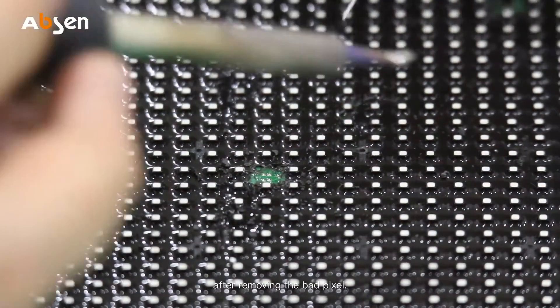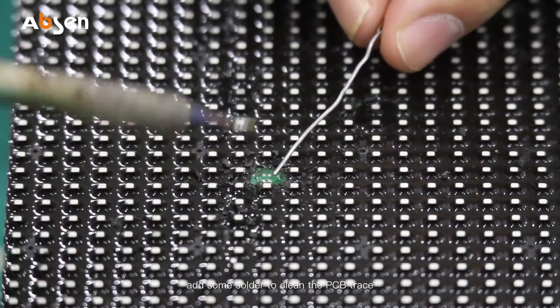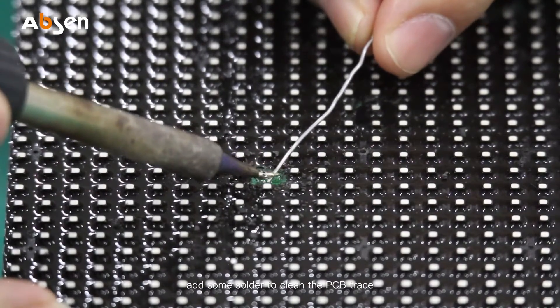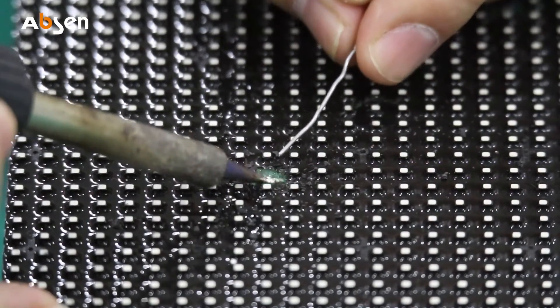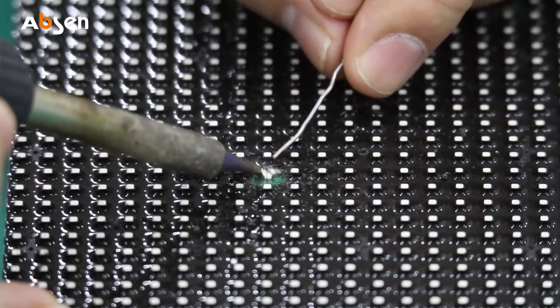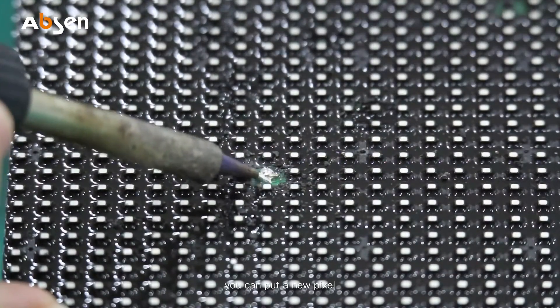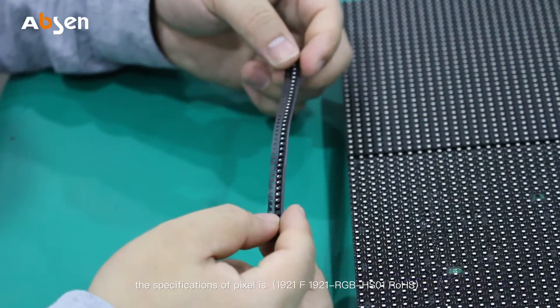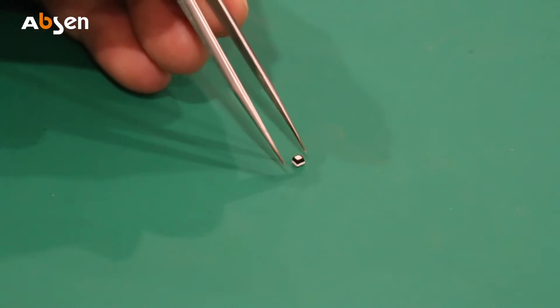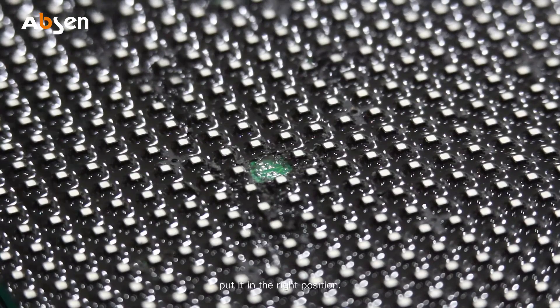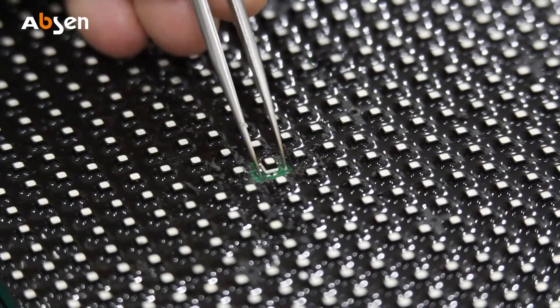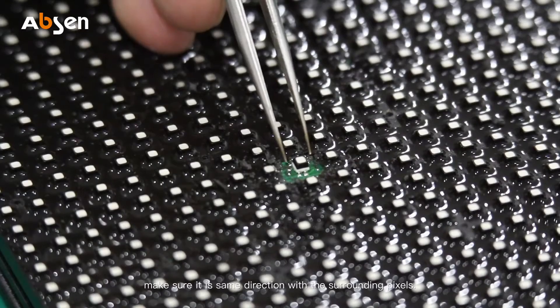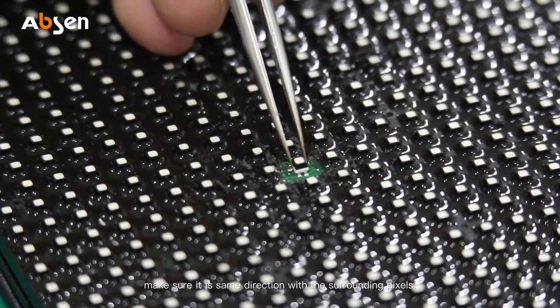After removing the bad pixel, add some solder to clean the PCB trace. After cleaning, you can put a new pixel. The specifications of the pixel is 1921. Take a new pixel, put it in the right position, and make sure it's the same direction as the surrounding pixels.